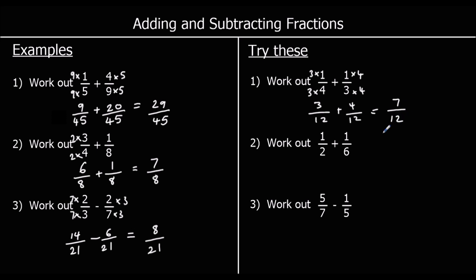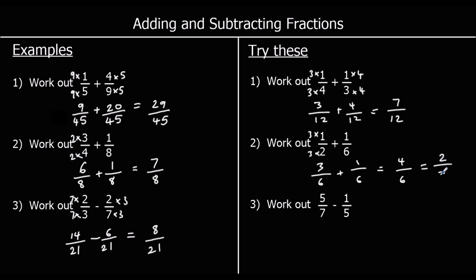Question two: the easiest way to make the bottom numbers the same is to multiply the top and bottom of one-half by three, giving three-sixths plus one-sixth, which is four-sixths. We can simplify this answer — four and six are both in the two-times table, so four-sixths is the same as two-thirds.